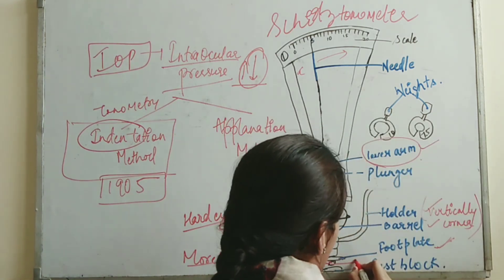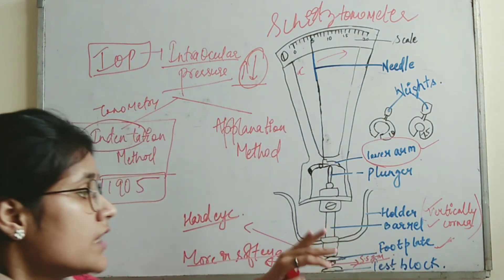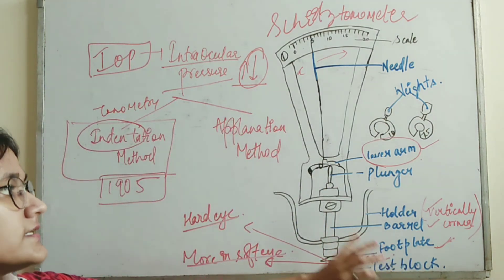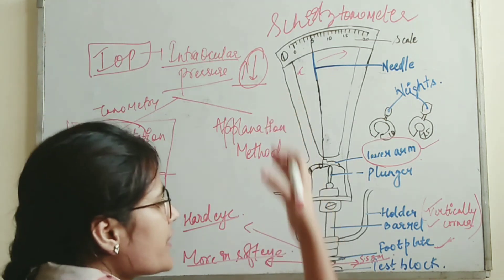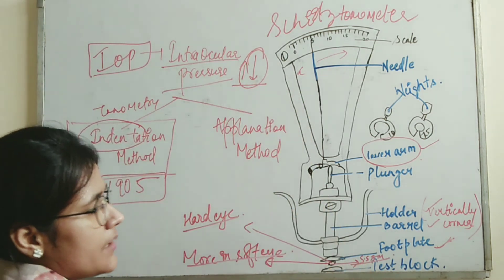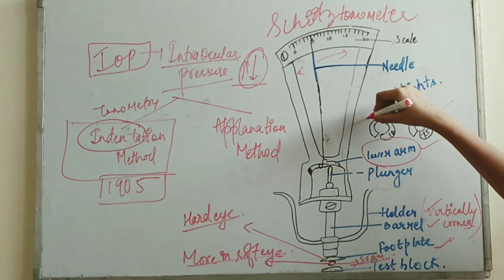The foot plate has some weight. This foot plate is having 5.5 gram weight generally. If we want to increase the weight and there is no reading after 5.5 grams, then we will increase the weight by 7.5 grams or 10 grams.